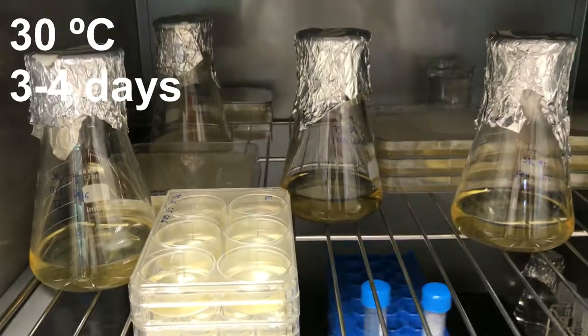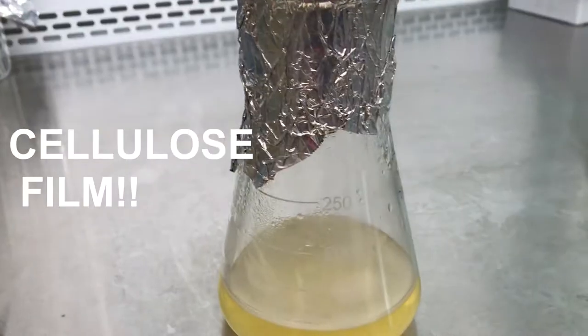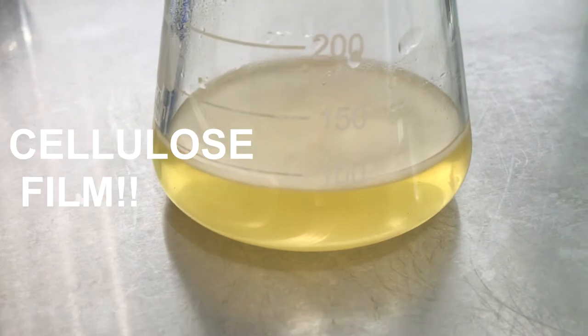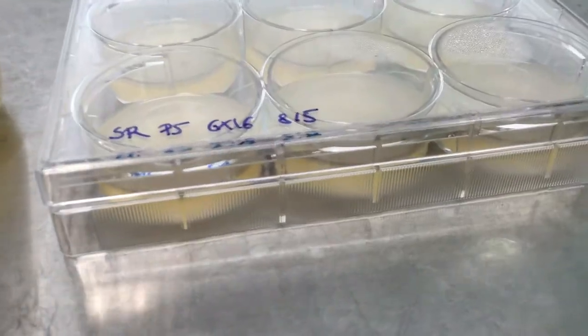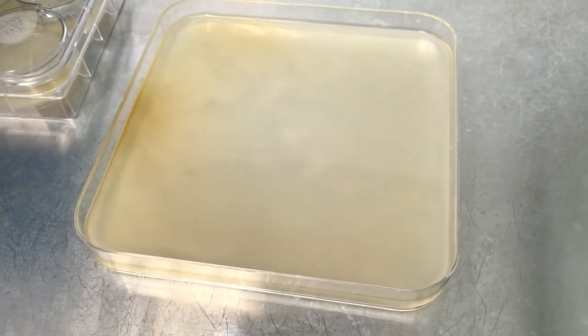And ta-da! We obtain a cellulose film on the interface liquid-air. Depending on the flask used, the cellulose can have different shapes, circle or square.